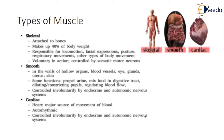Cardiac muscle is located only in the heart. Cardiac muscle pumps the blood around the body. Cardiac muscle stimulates its own contraction, which forms our heartbeat. Signals from the nervous system control the rate of contraction. This type of muscle is strong and acts involuntarily.